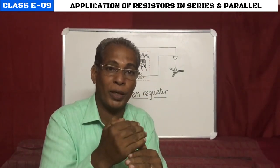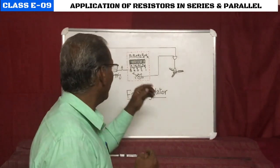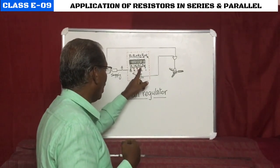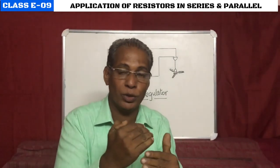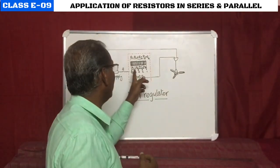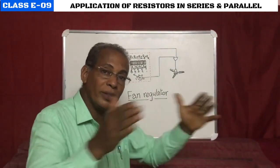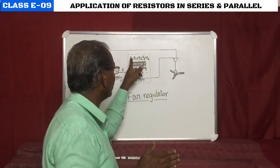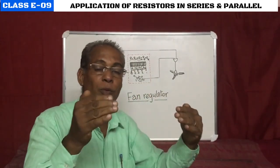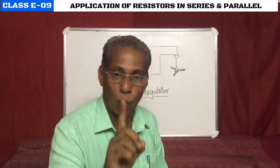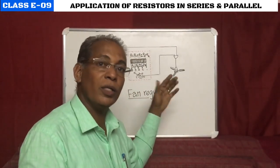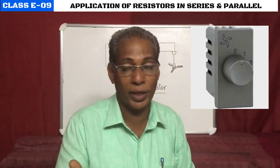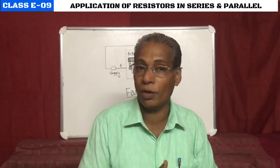If connecting at three, R1 and R2 are included, giving less current and less speed — speed three. At position two, R1, R2, R3 are in series, so speed reduces to two. At position one, all resistors R1+R2+R3+R4 are in series giving total resistance, minimum current, and minimum speed. This is the working of the fan regulator using resistors in series. This is the old electrical type; modern electronic regulators work on a different principle.